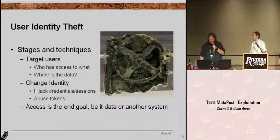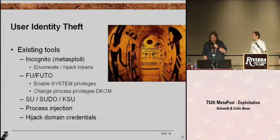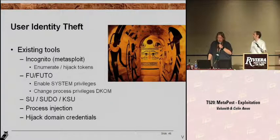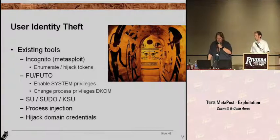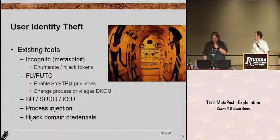The stages of this are: first, target the users — gather intelligence about who has access to what data. If you see Joe DBA, he's likely going to be the database guy. You want to change your identity by hijacking credentials, which we're going to show. Access is the end goal, not root. There are actually some pretty cool tools to do this. There's a tool called Incognito — it's actually been built into Metasploit now — it's very useful as you hijack tokens. The FU rootkit from rootkit.com is very cool, and you can actually extend it to do some interesting things. And then some more traditional things like process injection.